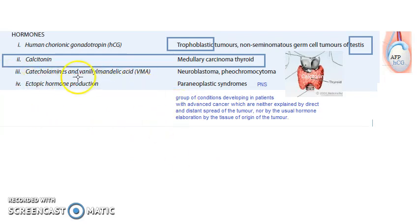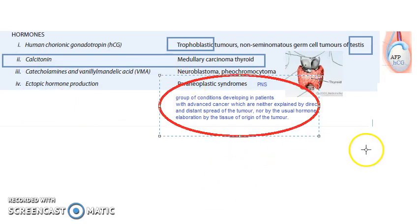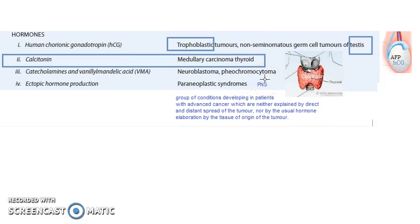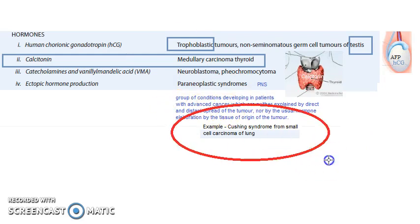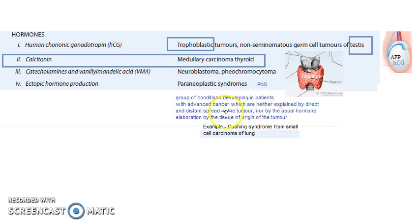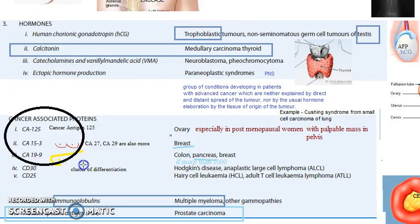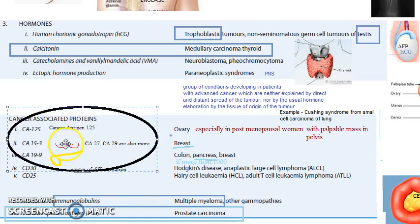Ectopic hormone production occurs in paraneoplastic syndromes (PNS). These are conditions that happen in association with a neoplasm but without a direct anatomical connection. For example, in small cell carcinoma of the lung, Cushing's syndrome occurs — strange because Cushing's relates to the adrenal gland, not the lung. This ectopic hormone production is part of paraneoplastic syndromes.